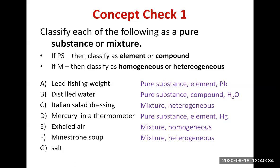Salt — salt has the formula NaCl, made of sodium and chlorine, so we call it sodium chloride. It's a compound because we can give it its specific formula NaCl — always one sodium for one chlorine. It forms an ionic compound and is a pure substance.